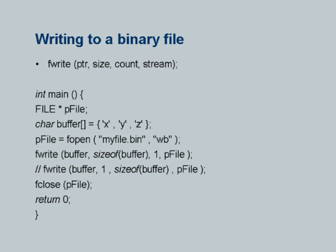This is a character array of three elements initialized in C, and therefore the size of this buffer is three bytes. Now, if I want to write all three bytes to a file, I can say pphile equals fopen myfile.bin, wb. Notice the file is opened for writing and is specified as a binary file. The .bin extension is my choice.